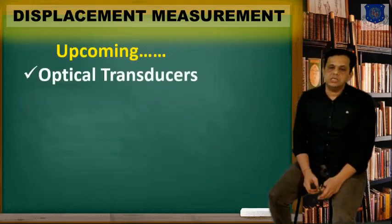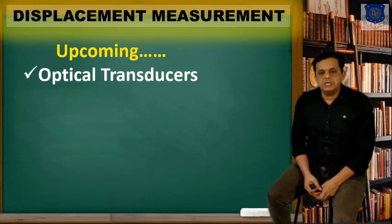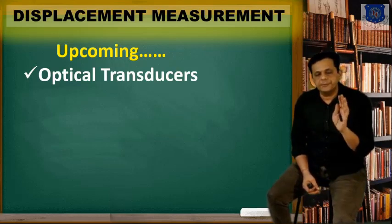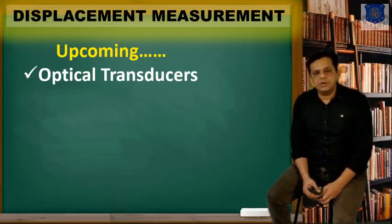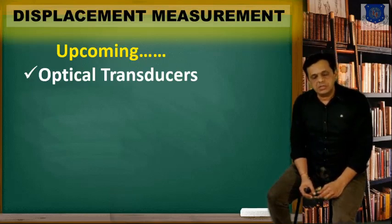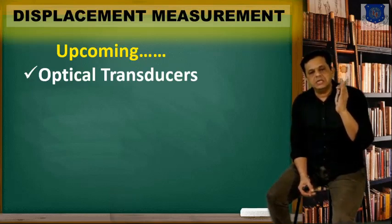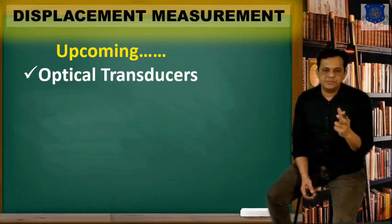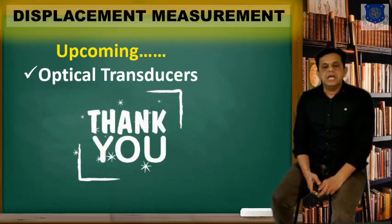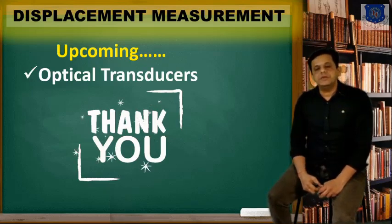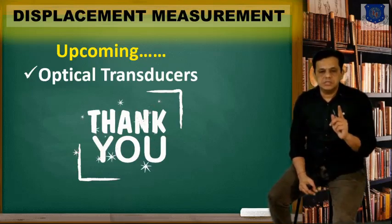This was the flapper-nozzle assembly — one of the important topics as per the GTU syllabus, under the chapter of displacement measurement. In the next forthcoming session, we will be talking about optical transducers: a variety of optical transducers and how we use the fundamentals of light transmission to measure displacement using various methods. Thank you so much. Please solve the questions given in the description of this video and study well.